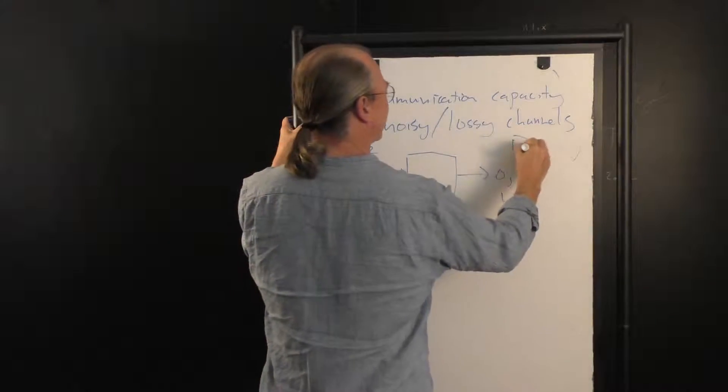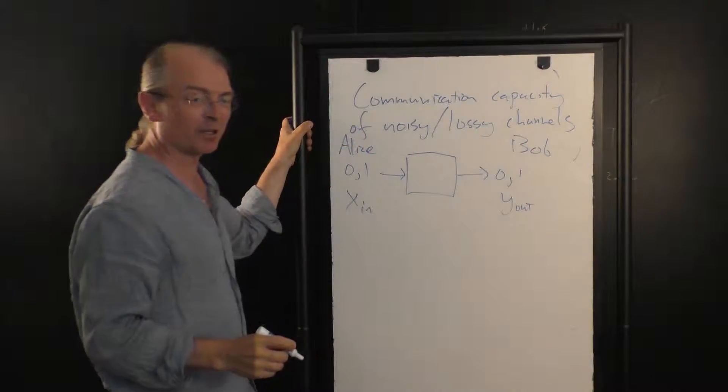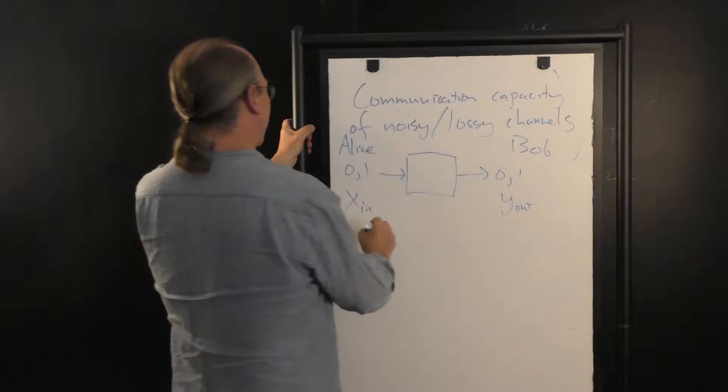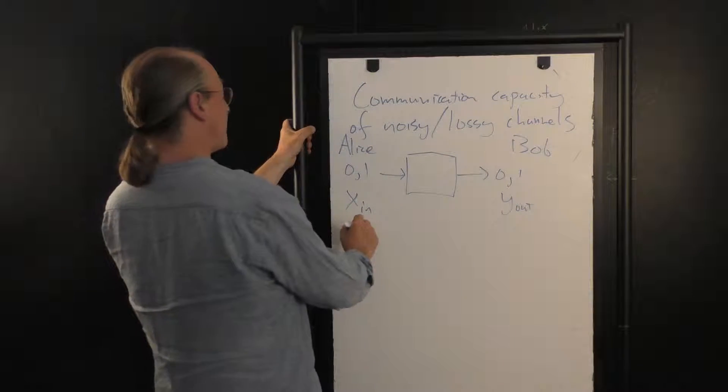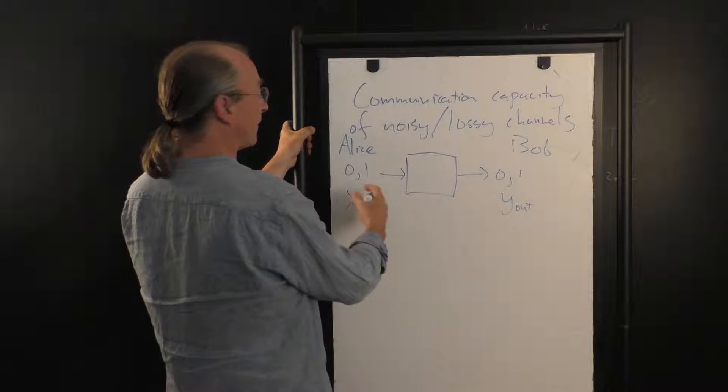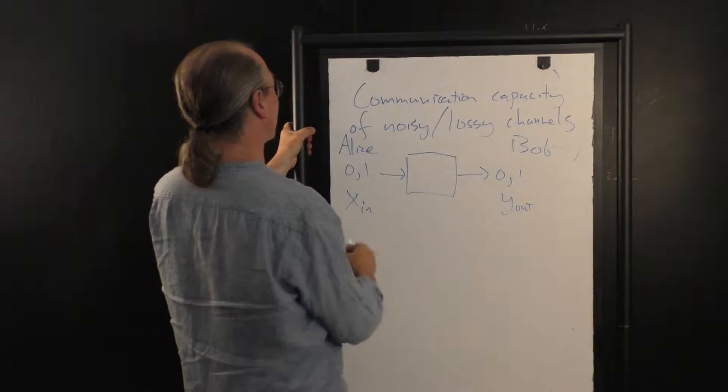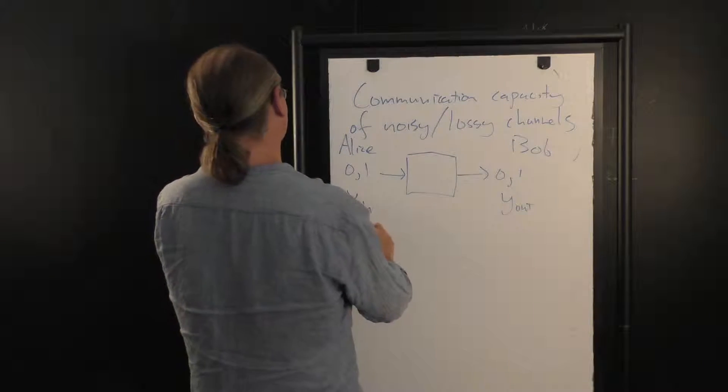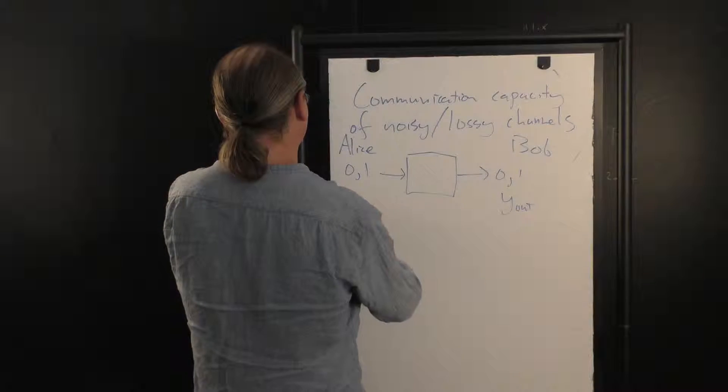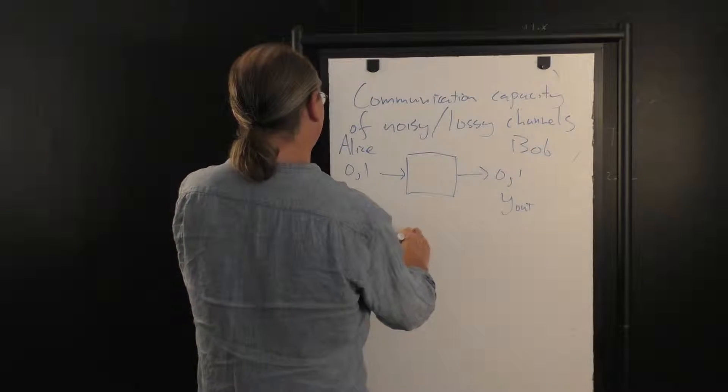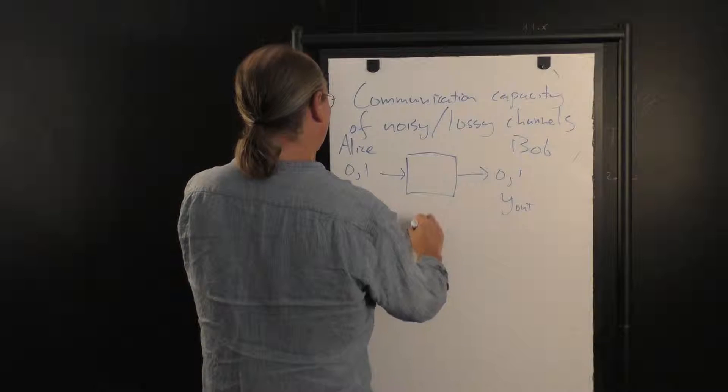Alice is over here, sending information. Bob is over here, receiving information. And last time I argued that the amount of information that actually gets through the channel is equal to the mutual information. So the mutual information between x_in and y_out.